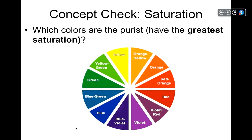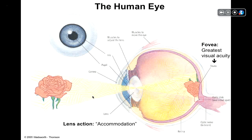Take a look at this color wheel. The purest, most saturated colors are green, yellow, orange, red, violet, and blue. Those colors are pure, whereas something like blue-green is a mixture. Let's now take a look at the human eye. My guess is that you're familiar with some of these structures, but we're going to go over them — this may be a review.